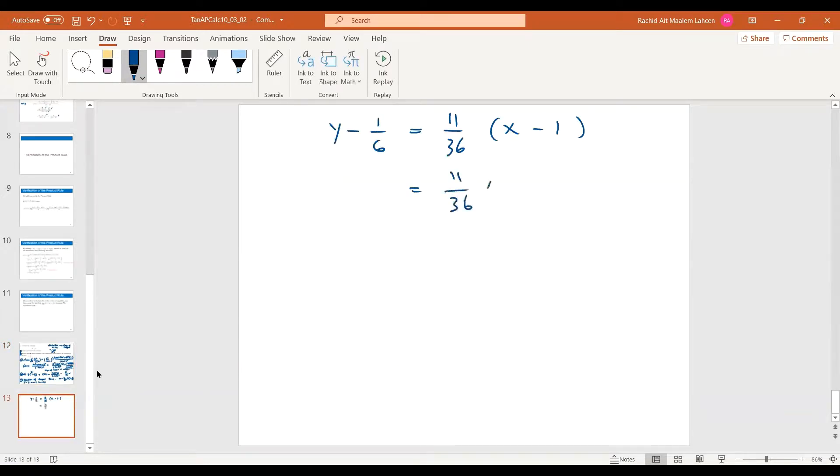So 11 over 36 X. We add one sixth to both sides. So we need a common denominator. And that's going to give us 11 over 36 X, minus five. And that's going to give us 10 over 36.